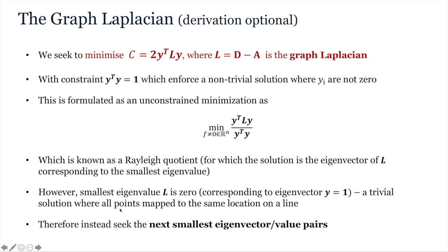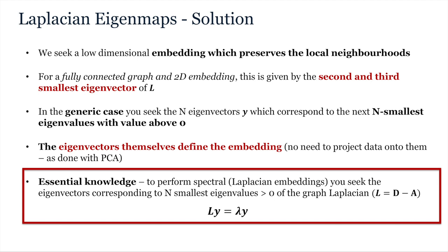However, this runs into a further snag because the smallest eigenvalue of the graph Laplacian is always zero and this always corresponds to a constant eigenvector, which strikes another trivial solution where all points get mapped to the same location. Therefore, a second constraint is added to prevent this trivial solution, resulting in the solution that you are seeking being a solution corresponding to the next smallest eigenvector eigenvalue pairs.